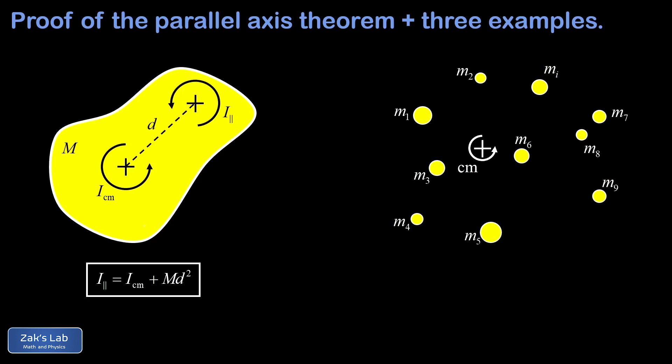If we're trying to prove something about a rigid body, we can visualize it as a swarm of individual point masses, because any continuous mass can be chopped up into point masses, and anything we prove about this collection will apply to a continuous rigid body. We've visualized a swarm of 10 particles, labeled one through nine, plus an arbitrary mass m_i at an arbitrary location — that's the one we'll focus on for the proof.